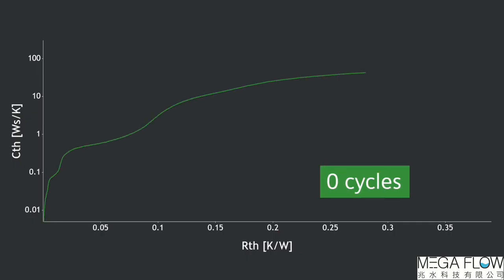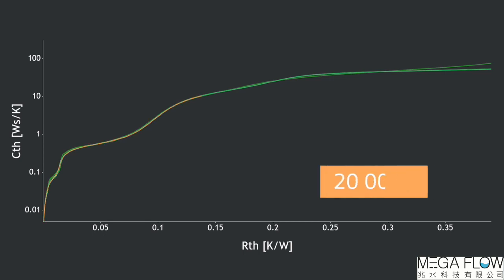Moreover, the thermal transient test results and the generated structure functions can help understanding how the structural defects develop. It can be used to identify root causes of failure and weaknesses of the structure, and hence providing useful feedback to the development.